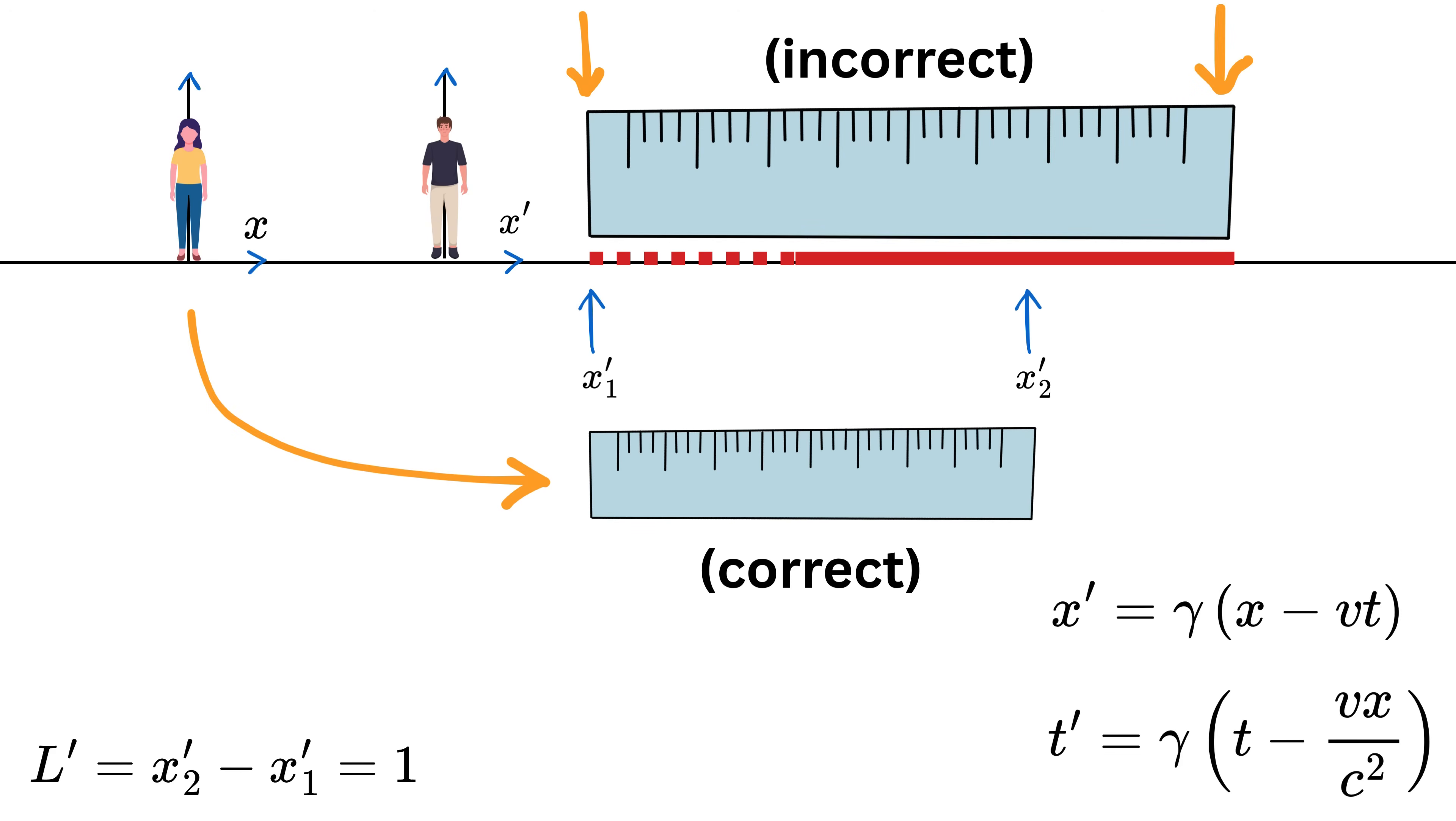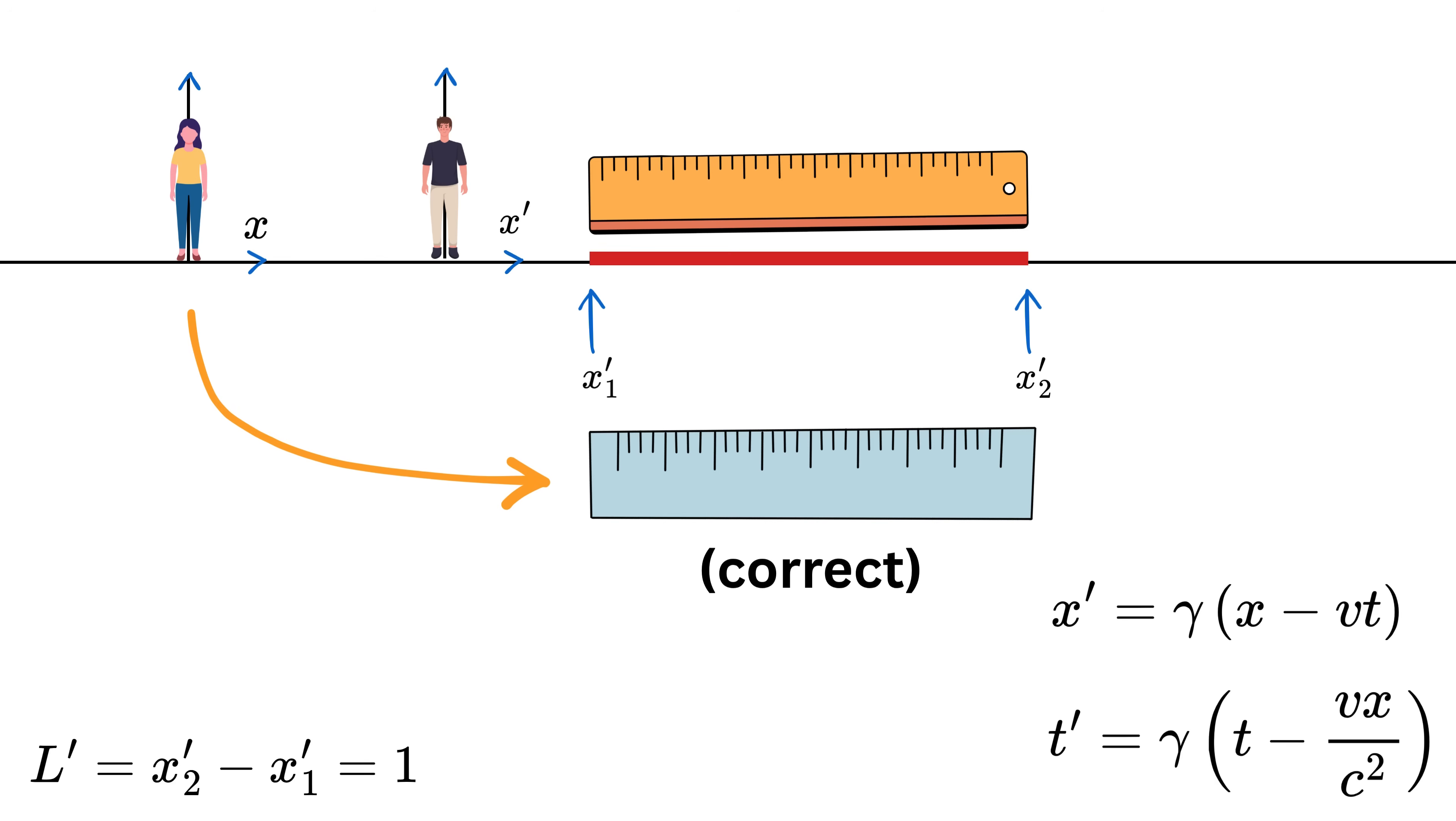That's because if you check one end a little later than the other, the object might have moved in that tiny gap of time and you'll get the wrong result. So length must always be measured by noting the positions of both ends simultaneously in your frame.